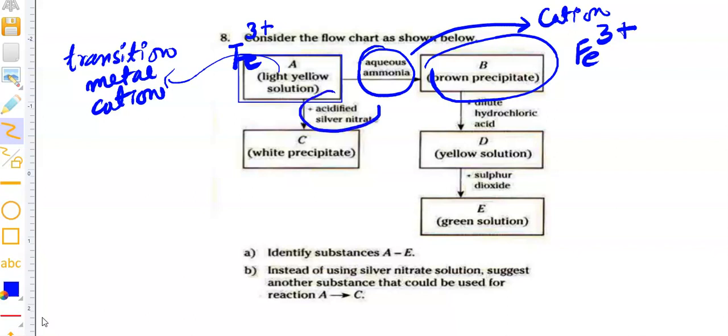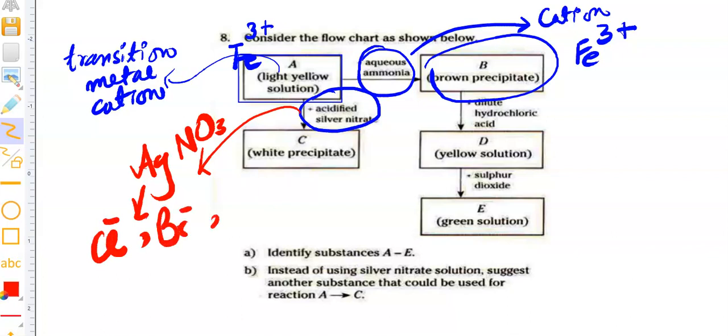Now, the second part. You added acidified silver nitrate. Whenever you talk about acidified silver nitrate, you need to think that it contains anion and this reagent is meant to identify halides. So AgNO₃ is an identifying reagent for halide, chloride ion, bromide or iodide. And you know that chloride ion gives white precipitate. So here we have white precipitate. It indicates that we have FeCl₃.